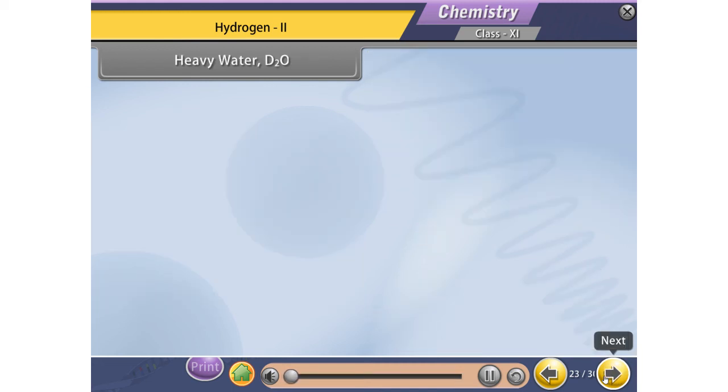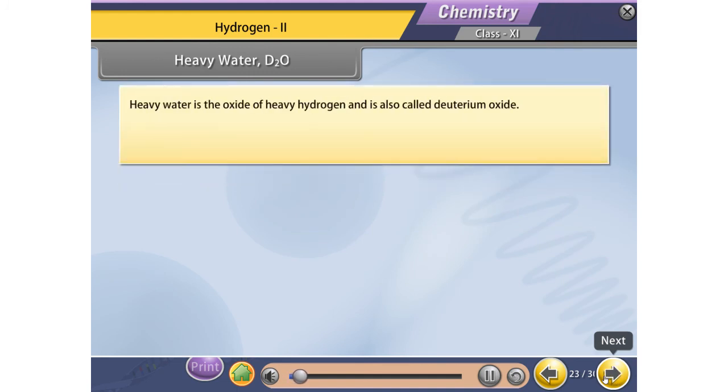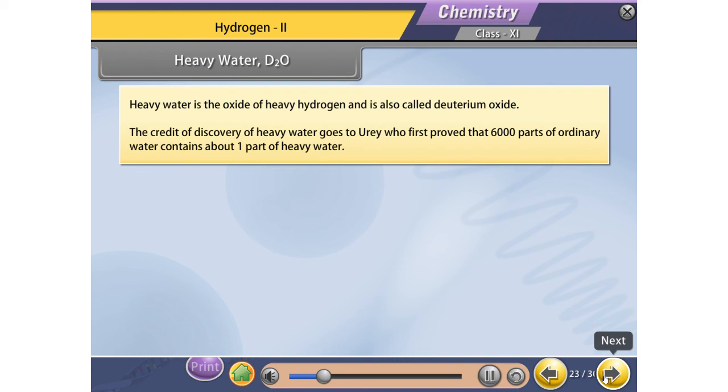Heavy water D2O: Heavy water is the oxide of heavy hydrogen and is also called deuterium oxide. The credit of discovery of heavy water goes to Urey, who first proved that 6,000 parts of ordinary water contains about one part of heavy water.